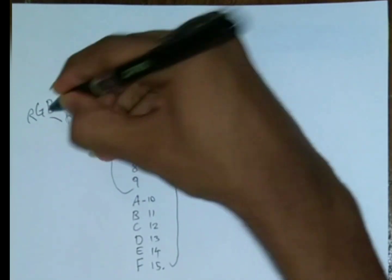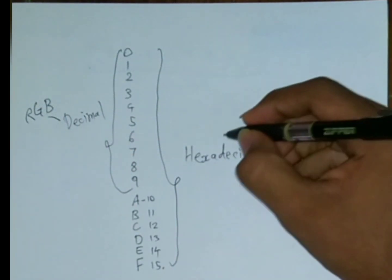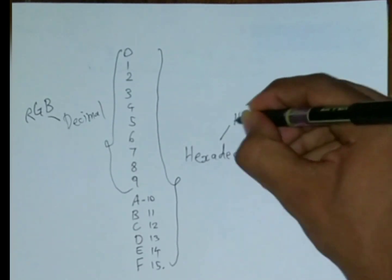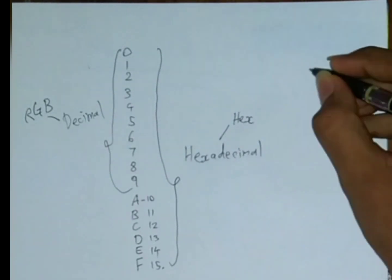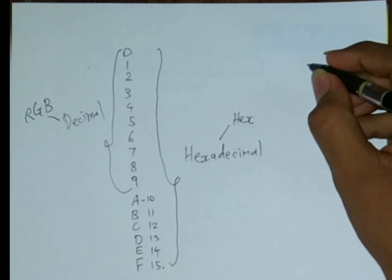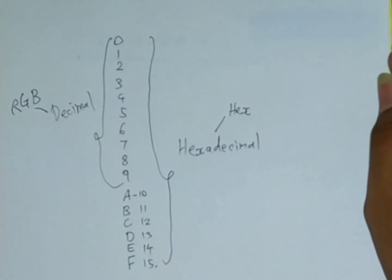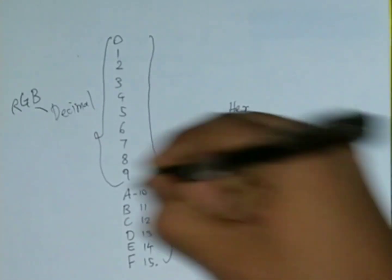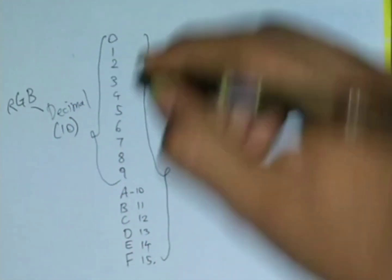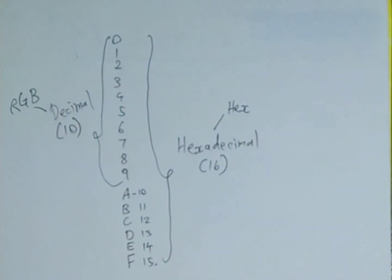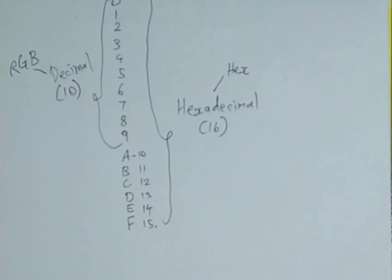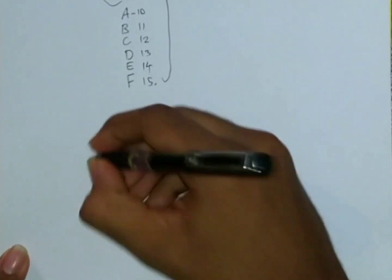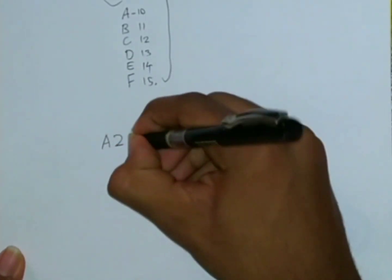RGB uses the decimal system and hex, as the name suggests, uses hexadecimal. So let me just write the digits — 16 and this is 10. So if you have a hexadecimal number like A, 2, F...